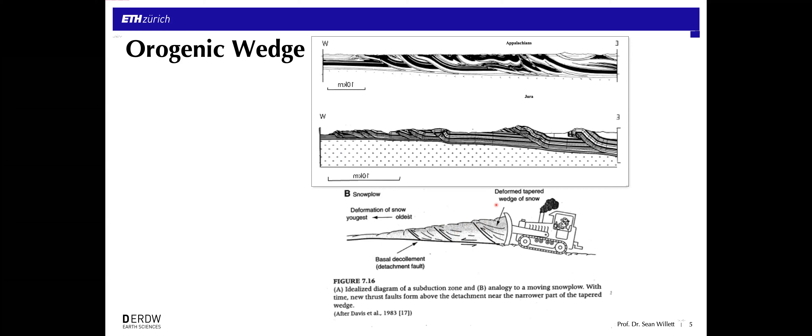This sort of shape and deformation is what we see in places like the Appalachian fold and thrust belt — we see exactly this pattern of deformation and this overall shape of the deformed body.